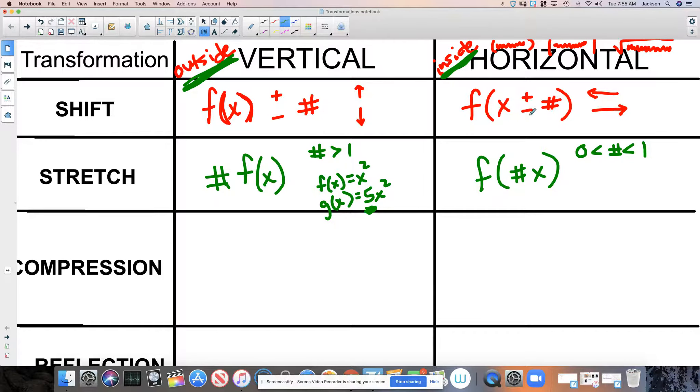So this follows suit with what we were talking about up here. We said if you add, you would assume you're moving to the right, but you're actually moving to the left. It's opposite day. Here, when you multiply the inside by a fraction, you're actually stretching the graph. And to sort of compare that to what we did here, let's take this same function, f of x equals x squared.